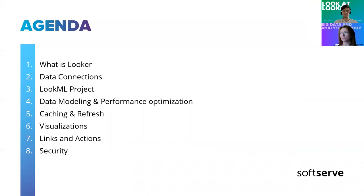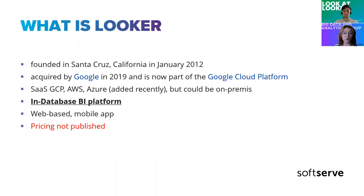I'll give you a brief introduction to what this platform is about, and we will focus on the data modeling part — just a quick overview of visualization capabilities and some key features, with more focus on data. So, what is Looker? It's quite new compared to other BI platforms. It was founded in 2012, and in 2019 it was acquired by Google. Now it is part of Google platform products.